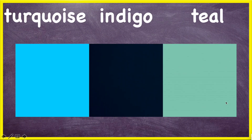And finally, we have turquoise, indigo, and teal. Turquoise is this beautiful blue color that is often associated with coral reefs — the water by the beach, perhaps on an ocean island. Indigo is this really dark blue. And then you have teal.